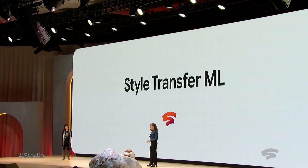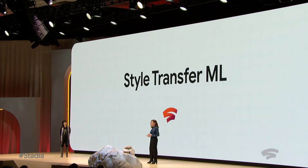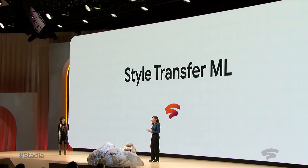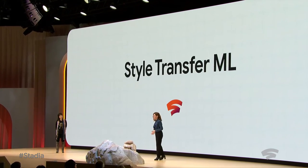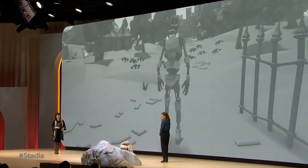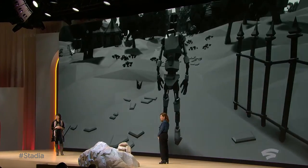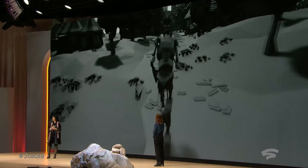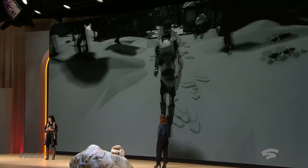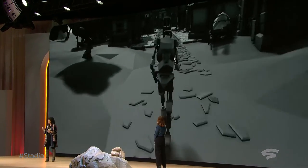With Style Transfer ML, Google is applying the science of machine learning to art visualization. Style Transfer is a machine learning technology that runs on the video frame created by the game. All of this happens in real time on a Stadia instance. We built this demo to show you what it can do.